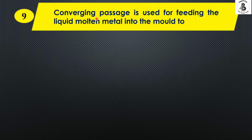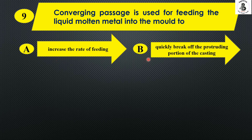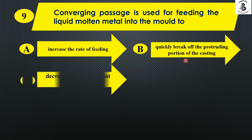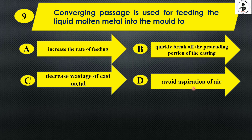A converging passage is used for feeding liquid molten metal into the mold. Option A increases the rate of feeding. Option B quickly breaks off the protruding portions of the casting. Option C decreases wastage of cast metal. And Option D avoids aspiration of air.